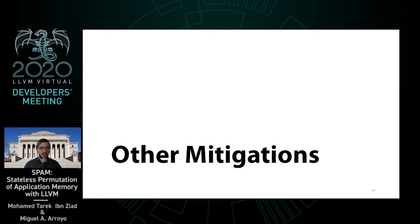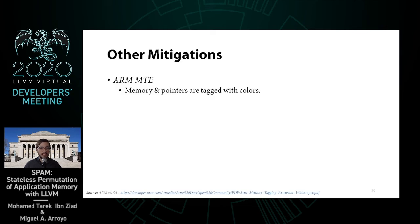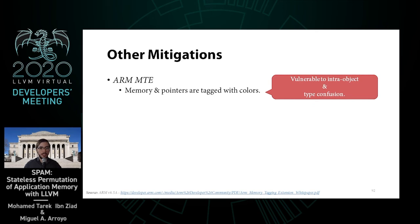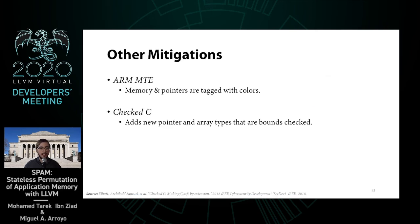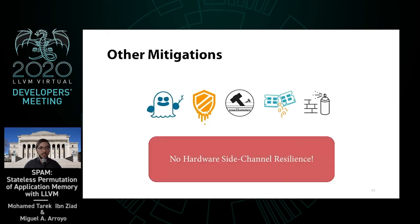There are a lot of great talks on memory safety at this conference, so we'll briefly discuss how they relate to SPAM. ARM Memory Tagging Extension (MTE) is a new ISA extension in which memory and pointers are tagged with colors, providing spatial memory safety by matching the colors of the pointer and the accessed memory. However, due to a limited set of colors, ARM MTE has lower entropy against non-adjacent spatial overflows and use-after-free compared to SPAM, and is vulnerable to intra-object and type confusion violations. Checked-C is an extension to C that adds new pointer and array types that are bounds-checked for spatial memory safety. To the best of our knowledge, Checked-C has no temporal protection, leaving it vulnerable to use-after-free attacks. The biggest key difference is that none other than SPAM can offer hardware side-channel resiliency.